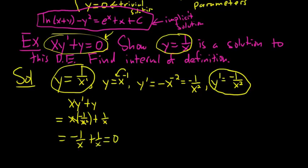That equals 0. So it checks out. We plugged in the function and its derivative and showed the result equals 0, which matches the DE. It is indeed a solution — that's what it means for a function to be a solution.